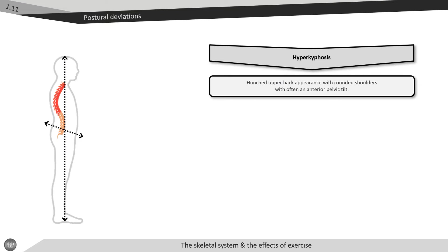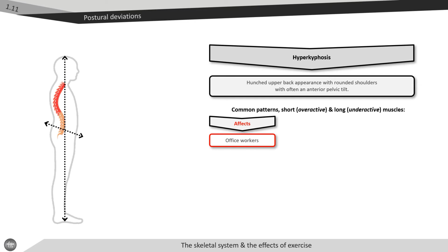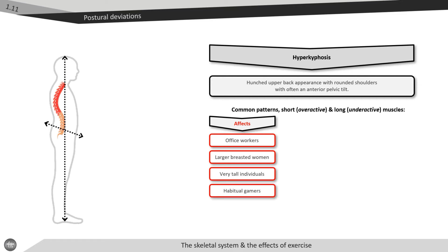Another typical postural deviation is known as hyperkyphosis or upper cross syndrome. This postural deviation is indicative of a hunched back appearance with rounded shoulders and often an anterior pelvic tilt. Hyperkyphosis typically affects office workers, large-breasted women, very tall individuals, and habitual gamers.